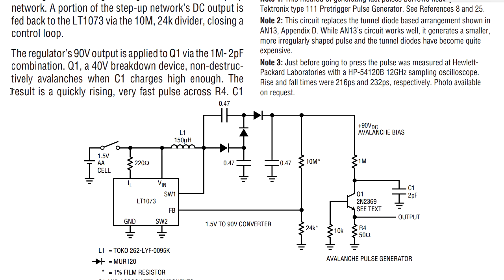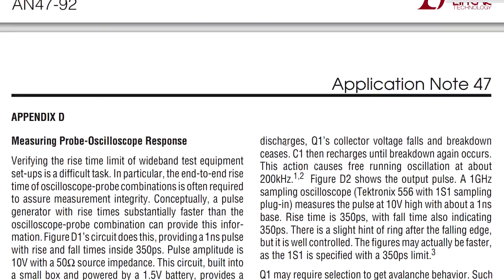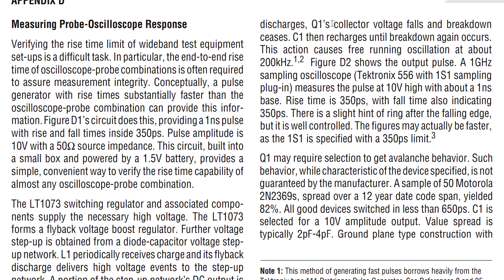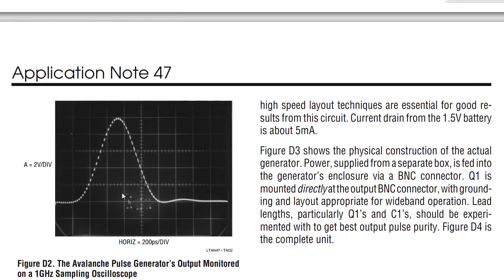It's effectively switched off, not doing anything, but once it reaches that maximum breakdown voltage, roughly 40 volts for this device, bang! Then it avalanches. The result is a quickly rising very fast pulse across the 50 ohm output. That's why you have to terminate it in 50 ohms on your oscilloscope as well. And then of course, there we go, C1 discharges, Q1's collector voltage falls, and the breakdown ceases, and bingo! C1 charges back up, and it free runs at about 200 kHz.